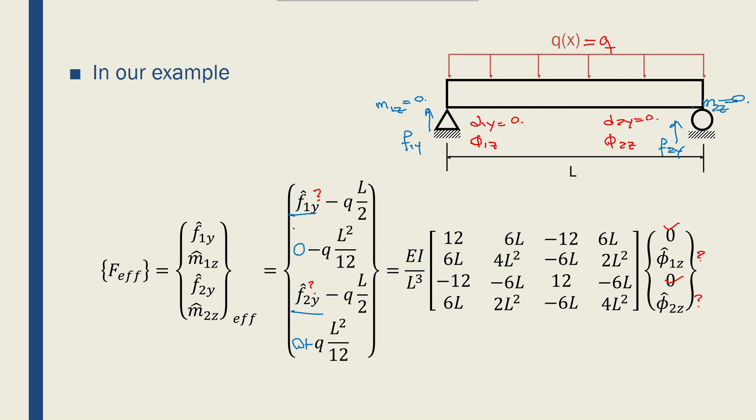And I know the Q's and L's as the inputs of my equation. So if I solve for this problem, I can find the f1y and f2y as well as phi1z and phi2z.